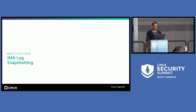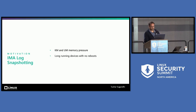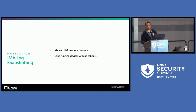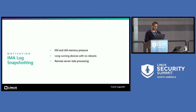What is the motivation behind IMA log snapshotting? Currently it's a monolithic log which sits in the kernel, and we observed a few problems. Kernel and user mode memory pressure is one issue. Devices that run for a long time without reboots cause stuff to accumulate, and we need to deal with that. And since the verifier sits in the cloud — it's not local — we want to make remote server-side processing fast. Those are the motivations.